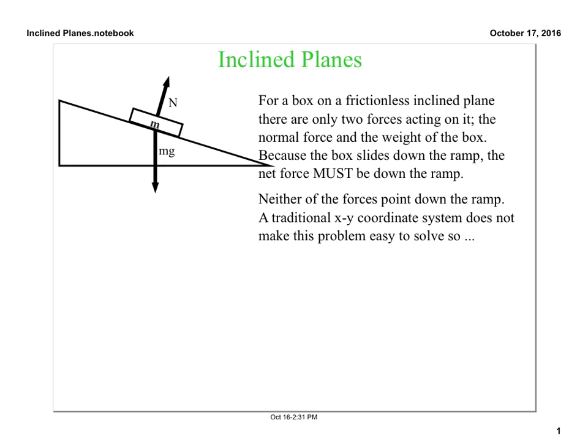We've got the normal force and that is actually at a little bit of an angle. Our normal force is always perpendicular, making a right angle with our inclined plane. And we also have the weight of the box, mg, and it still points straight down. Gravity still pulls straight down on our box, even though there is an inclined plane in the way.